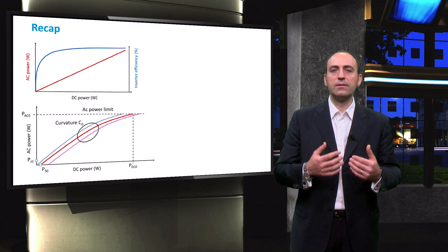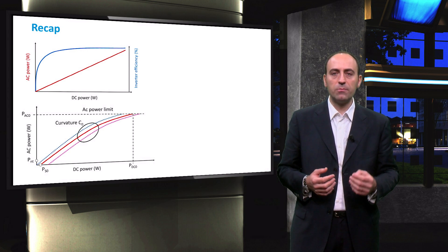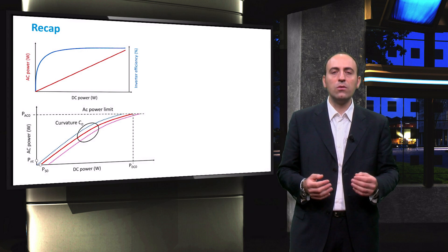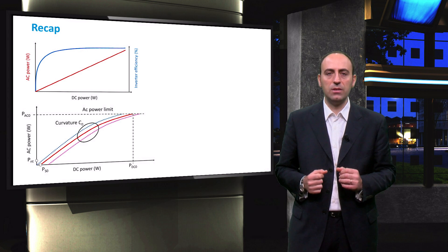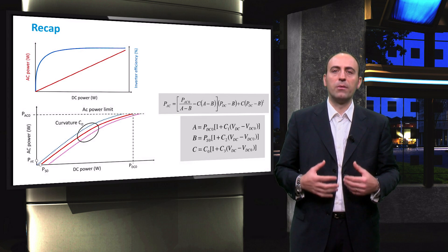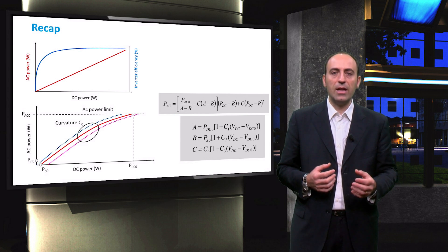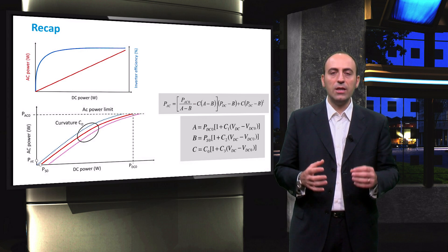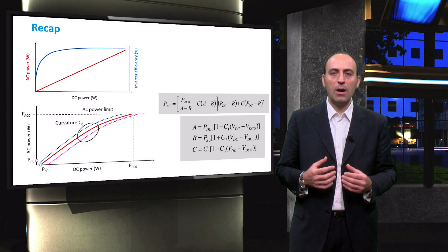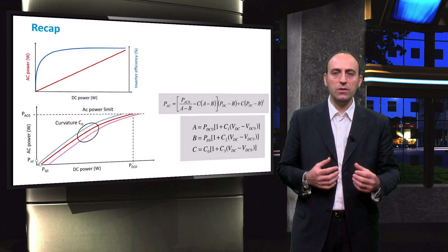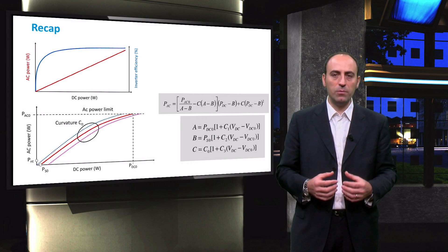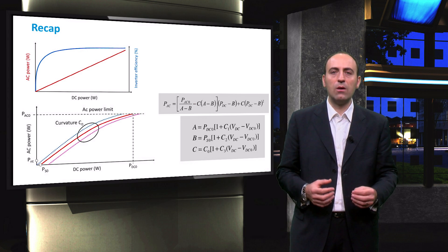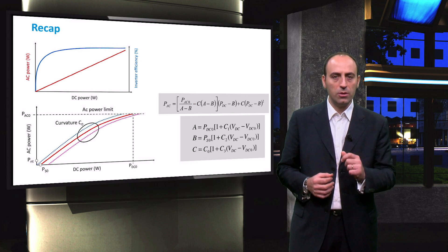Then, we saw that the SNL model provides parameters and data in order to model the inverter efficiency taking into account both the DC power and the DC voltage. Using the parameters given by this model and by the inverter manufacturer, it is possible to compute the AC power output as a function of the DC input. In this way, it is possible to choose the proper inverter for the PV system and to take into account the losses generated during the power conversion.